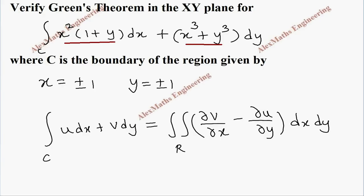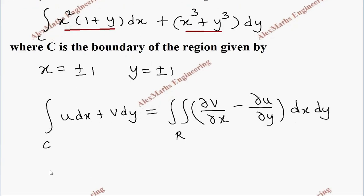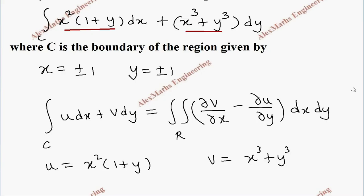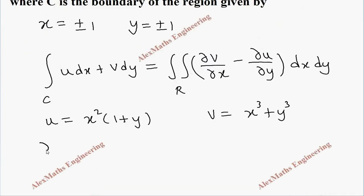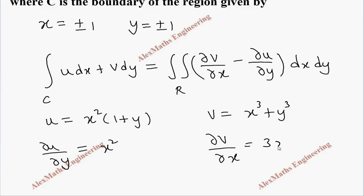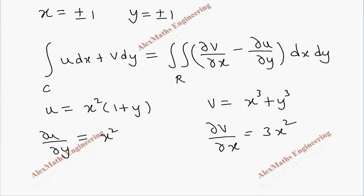From the question we have u and v. Let's take u equal to x² (1 + y) and v equal to x³ + y³. We find ∂u/∂y: x is constant, so the derivative is 1. And ∂v/∂x is 3x², since y is purely constant.